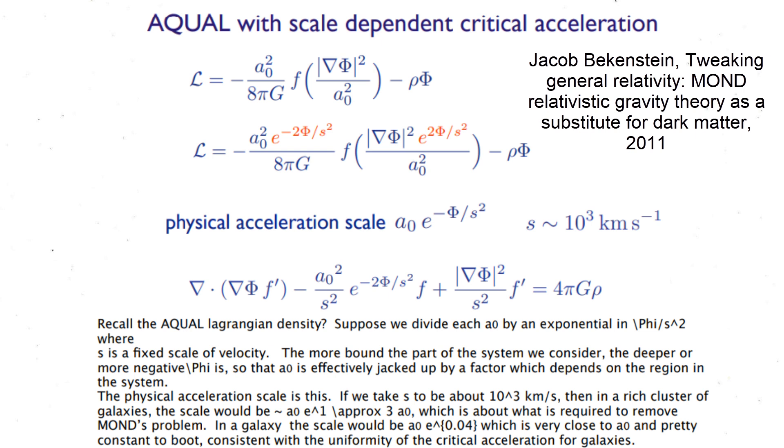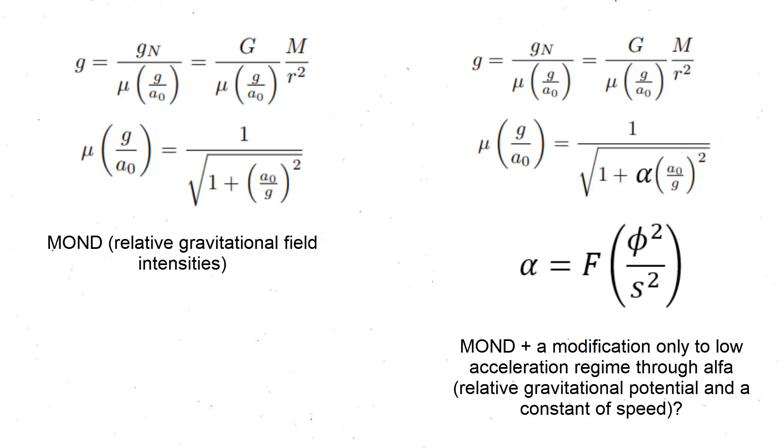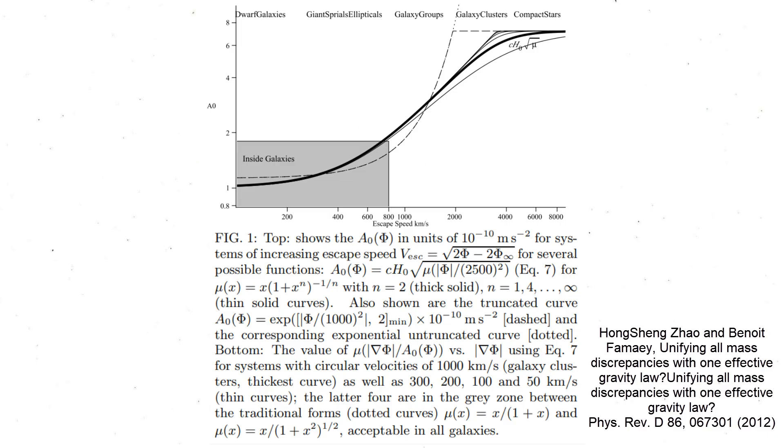This means that MOND, which is based on gravitational field intensities, may be missing a correction or a term based on gravitational potentials, which fundamental MOND could contain. The main problem one encounters with this idea is that if a correction to MOND is based on the depth of potential wells, it must yield Newtonian gravity for neutron stars, which have even deeper potential wells than clusters.